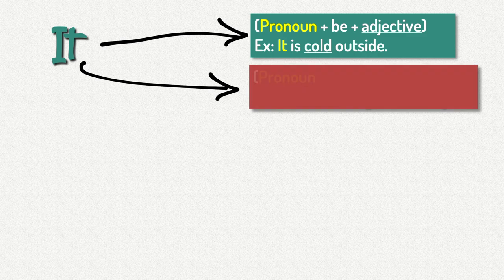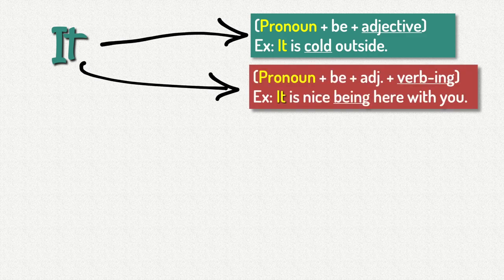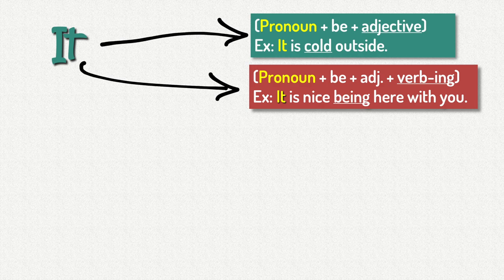It can also be used with the verb to be, plus an adjective, plus the verb plus ing, like in this example. It is nice being here with you. So it is the pronoun, the verb to be is, adjective nice, and then we have the verb be, being, ing, and then the rest.